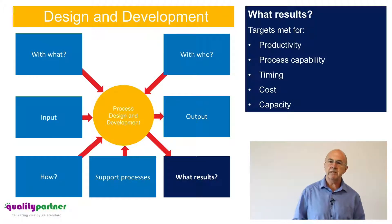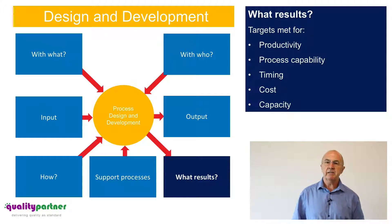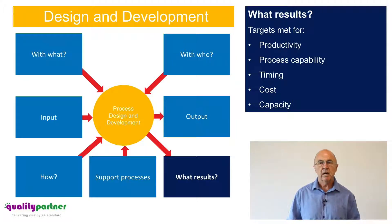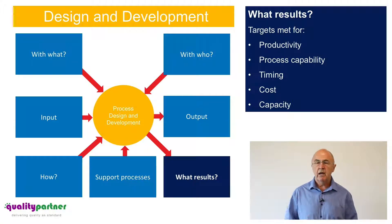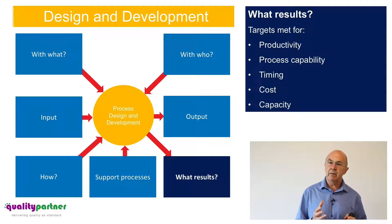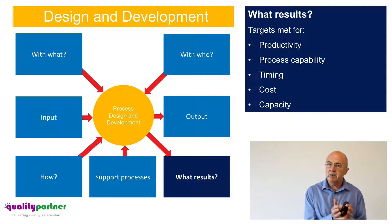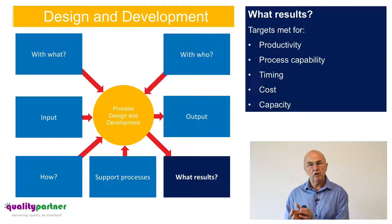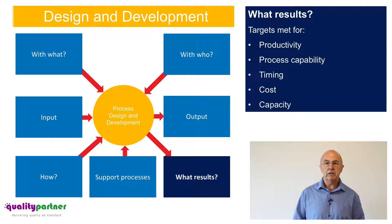In terms of results that process design and development is trying to achieve: we need defined targets as inputs, and as outputs we must demonstrate that we've designed a manufacturing process meeting productivity requirements, process capability requirements, required timing, cost requirements within the new product introduction, and adequate capacity to meet customer requirements. Whatever targets we've defined as inputs, we need to monitor results to confirm they've been achieved and take appropriate actions if they haven't.